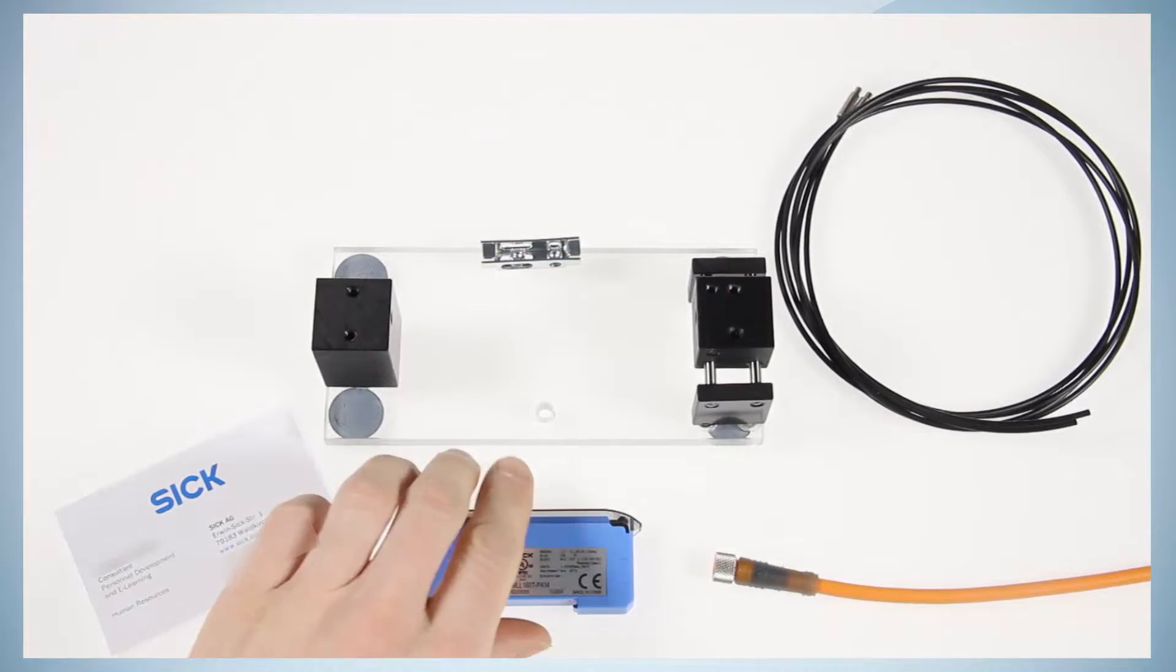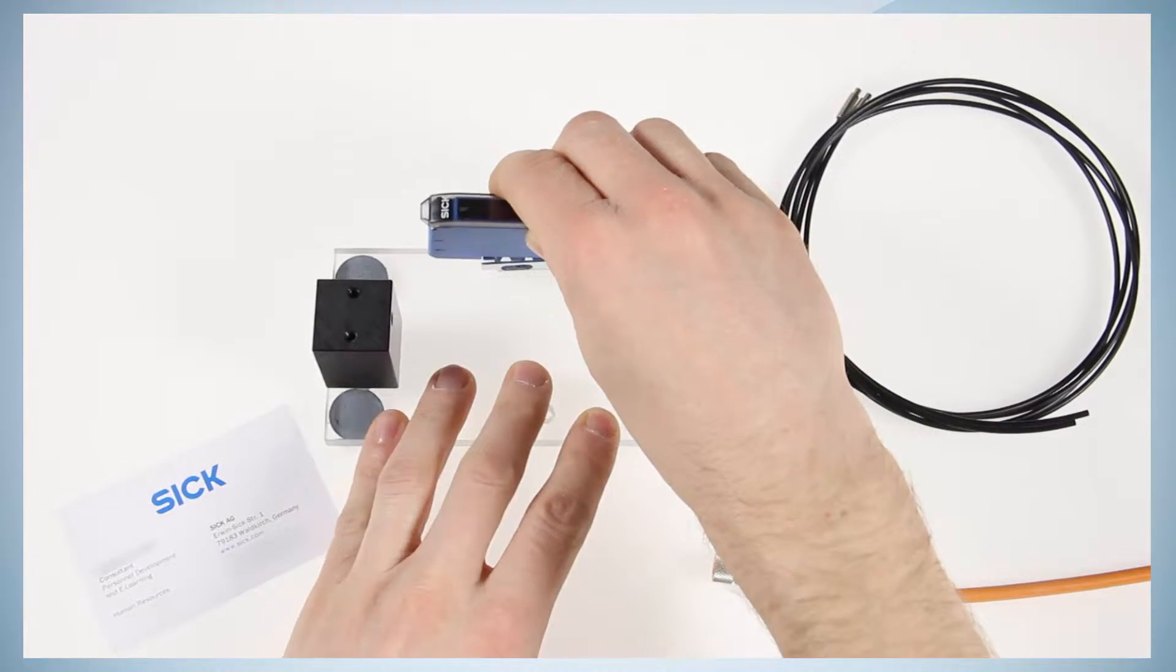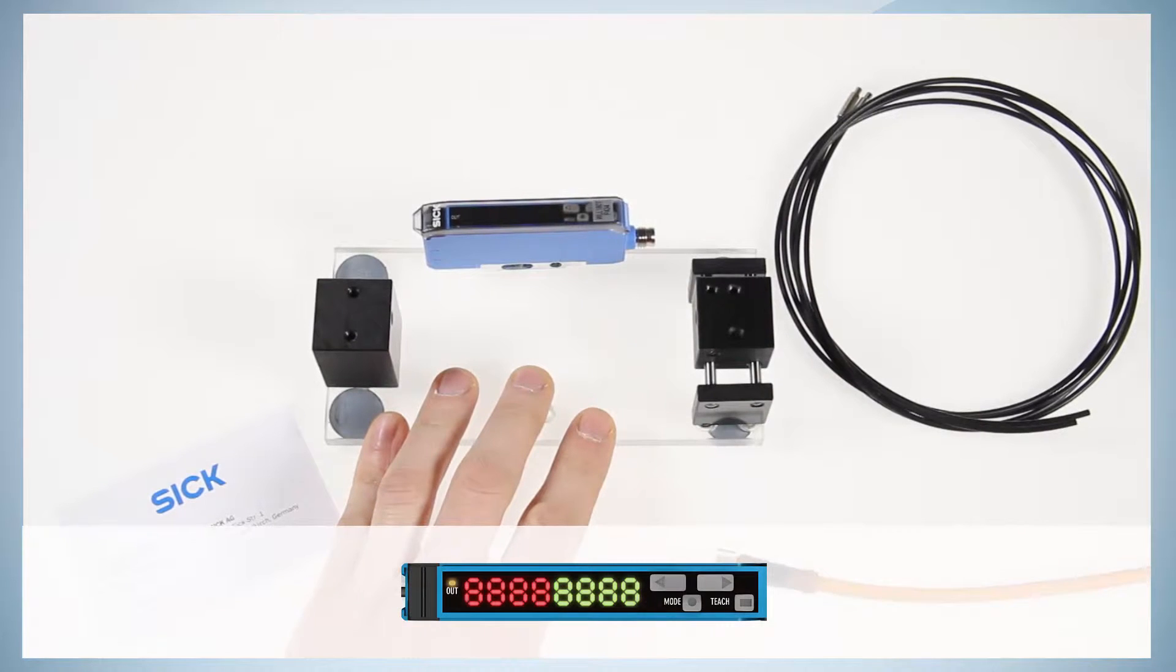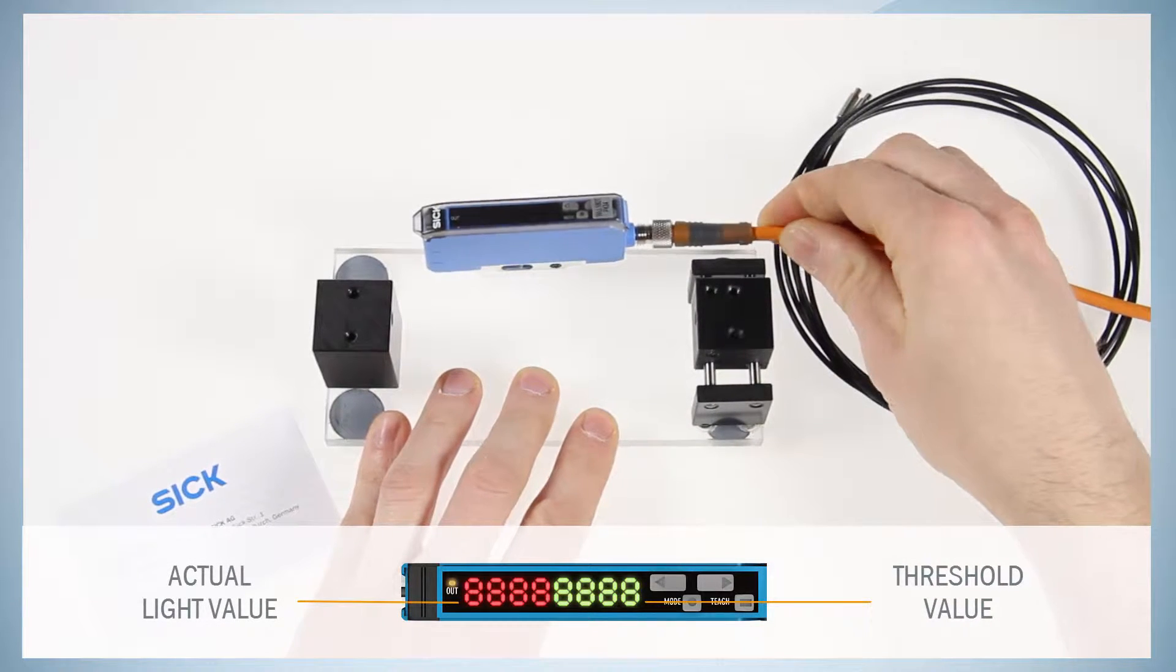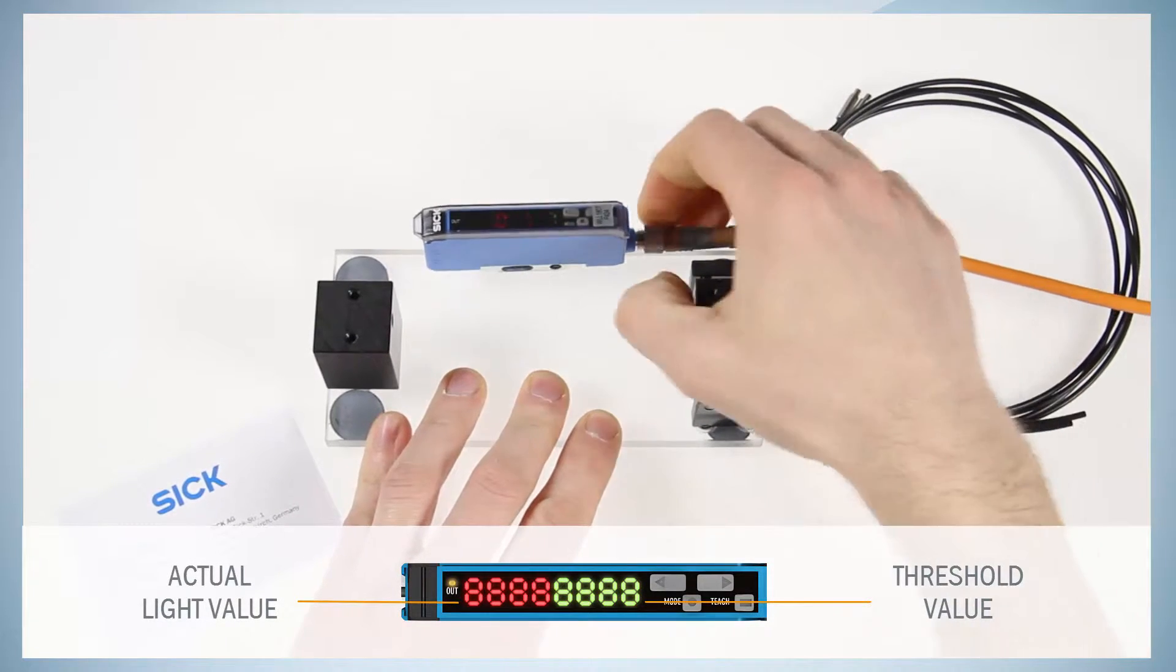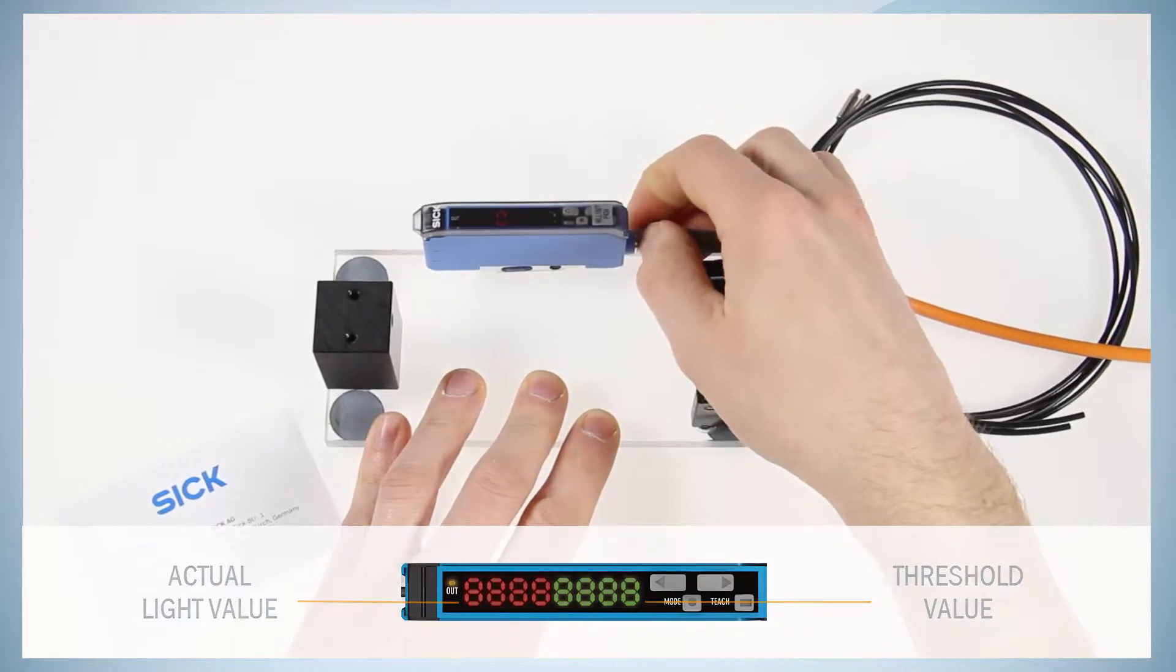Mount the WLL180T amplifier on the DIN rail of the demo kit and connect the amplifier to the power supply cable. Now, red and green numbers are visible on the display.